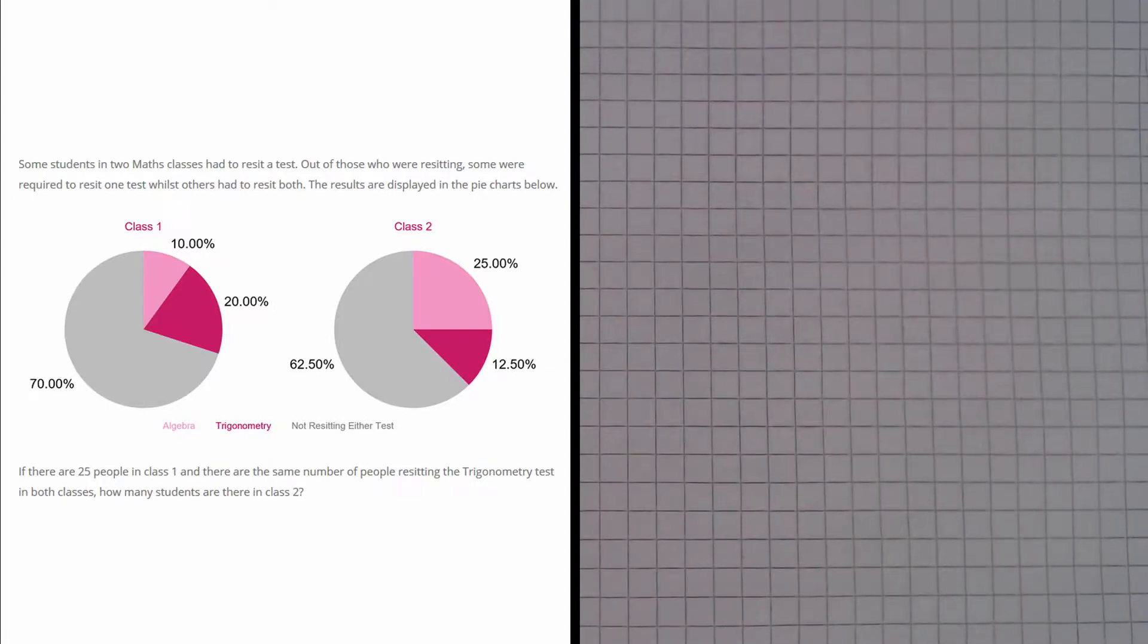The question tells us that there are 25 people in class 1, and there are the same number of people resitting the trigonometry test in both classes, and it asks us how many students are there in class 2.